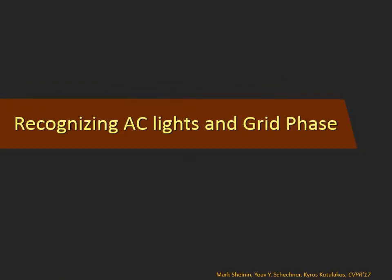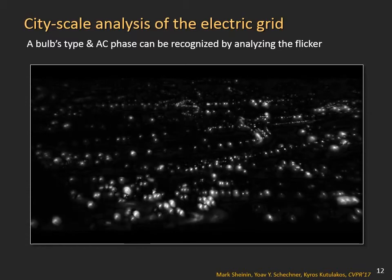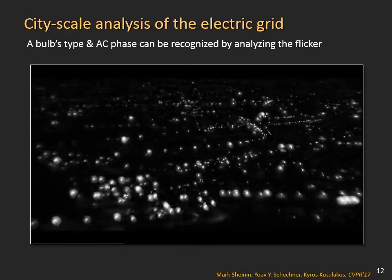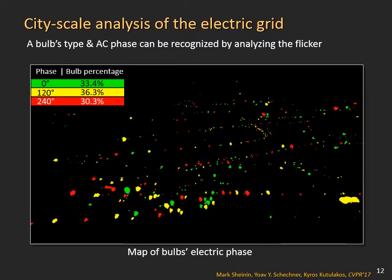Recognizing AC lights and grid phase: power plants supply AC voltage in three phases. Each phase is carried by an exclusive power line. One phase is delayed by a third of the AC period and is termed phase 120 degrees. Another phase is delayed by two thirds of the AC period and is termed phase 240 degrees. Bulb flicker thus depends on the AC phase that the bulb is connected to. Using the Delight database, the AC phase can be recognised at the scale of a city.